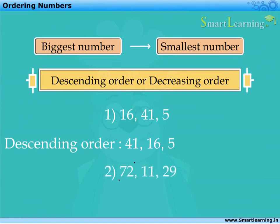Similarly, in 72, 11 and 29, 72 is the biggest number and 11 is the smallest number. Thus, in descending order, they can be written as 72, 29, 11.